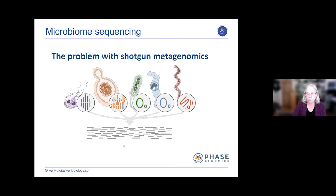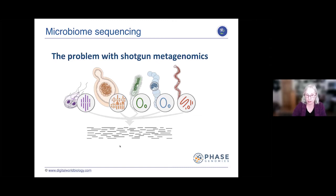The problem with microbiome sequencing is that we're not looking at just one genome — we're looking at multiple genomes. The way samples are prepared is to take the whole mix: samples of poop from a litter box, break it all up, chop all the DNA up, and then you've got pieces from many different organisms, many of which share the same genes.